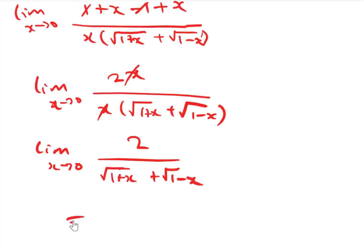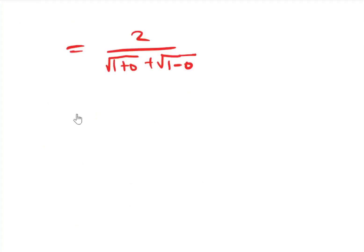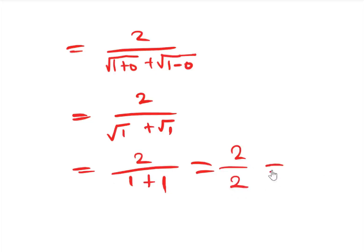Now as x tends to 0, substituting x equals 0 gives us 2 divided by the square root of 1 plus 0, plus the square root of 1 minus 0. This equals 2 divided by the square root of 1 plus the square root of 1, which is 2 divided by 1 plus 1, giving 2 divided by 2, which equals 1. So this is our limit.